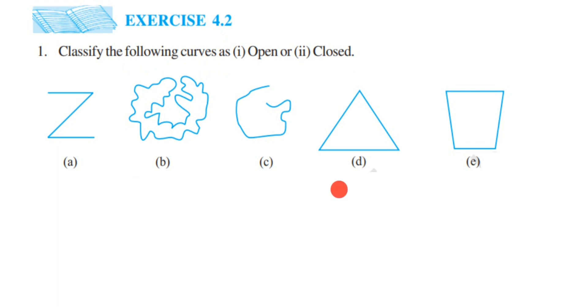So what do we mean by open? Open means whenever the starting point and end points are different, we are going to call it as open. And closed means the starting point and end point will be the same.